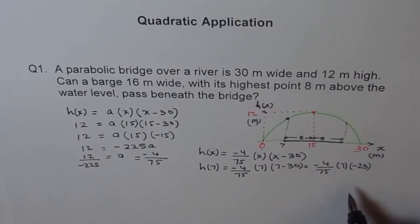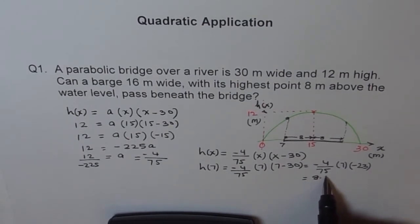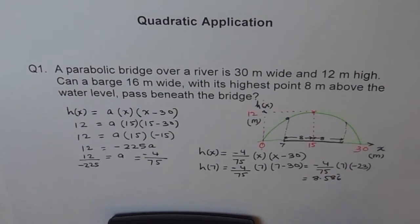Now, minus and minus becomes plus and we will use calculator to calculate the value here. So we are left with 4 times 7 times 23 equals to 644 divided by 75 equals to 8 something. We get 8.586 something. Definitely more than 8.